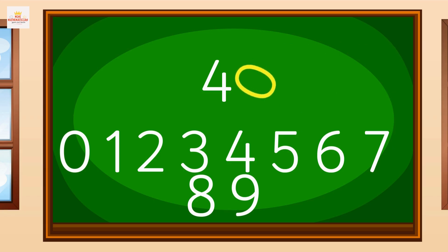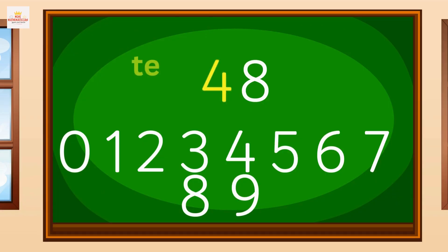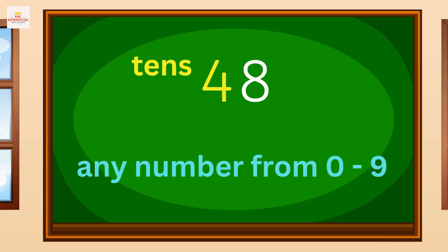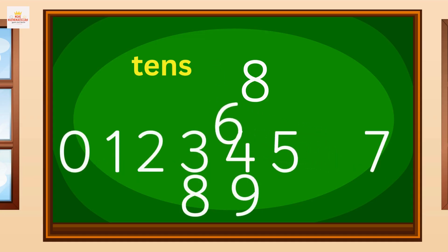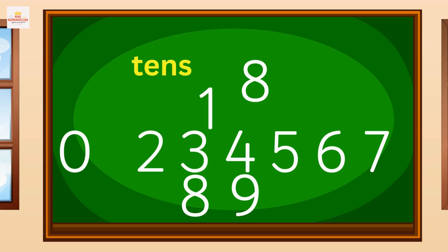Now let's put eight in the ones place — the number becomes 48. Let's move to the second digit from the right. This is called the tens place. It can also be any number from zero to nine. For example, if we put six in the tens place, the number becomes 68.